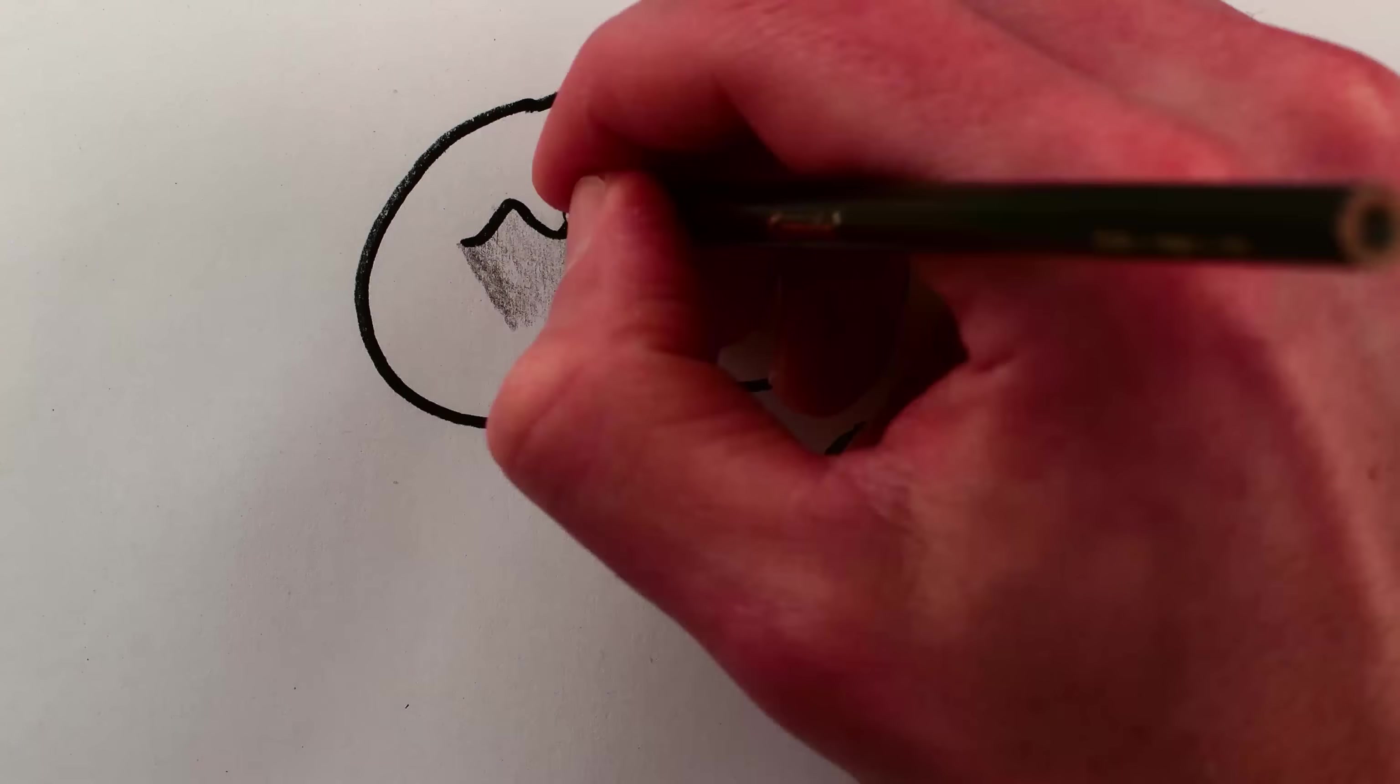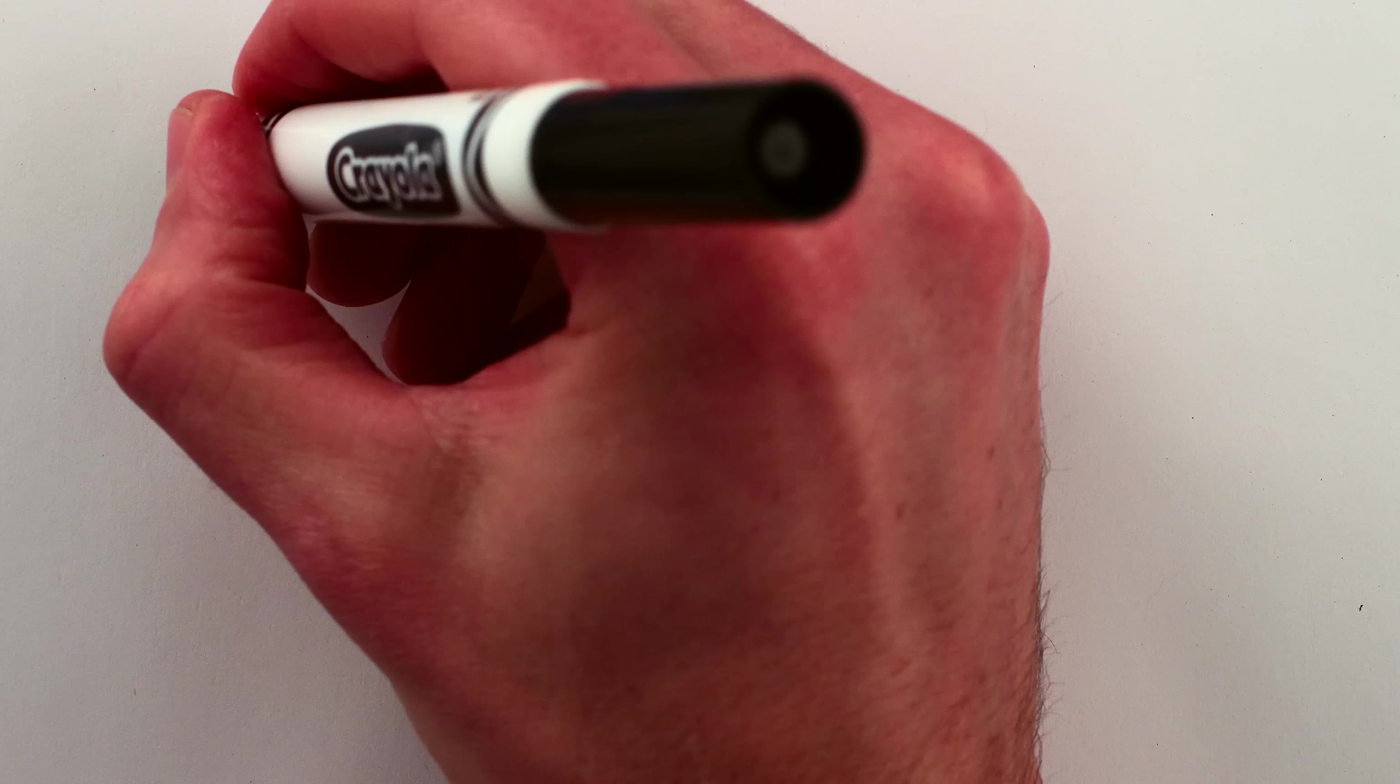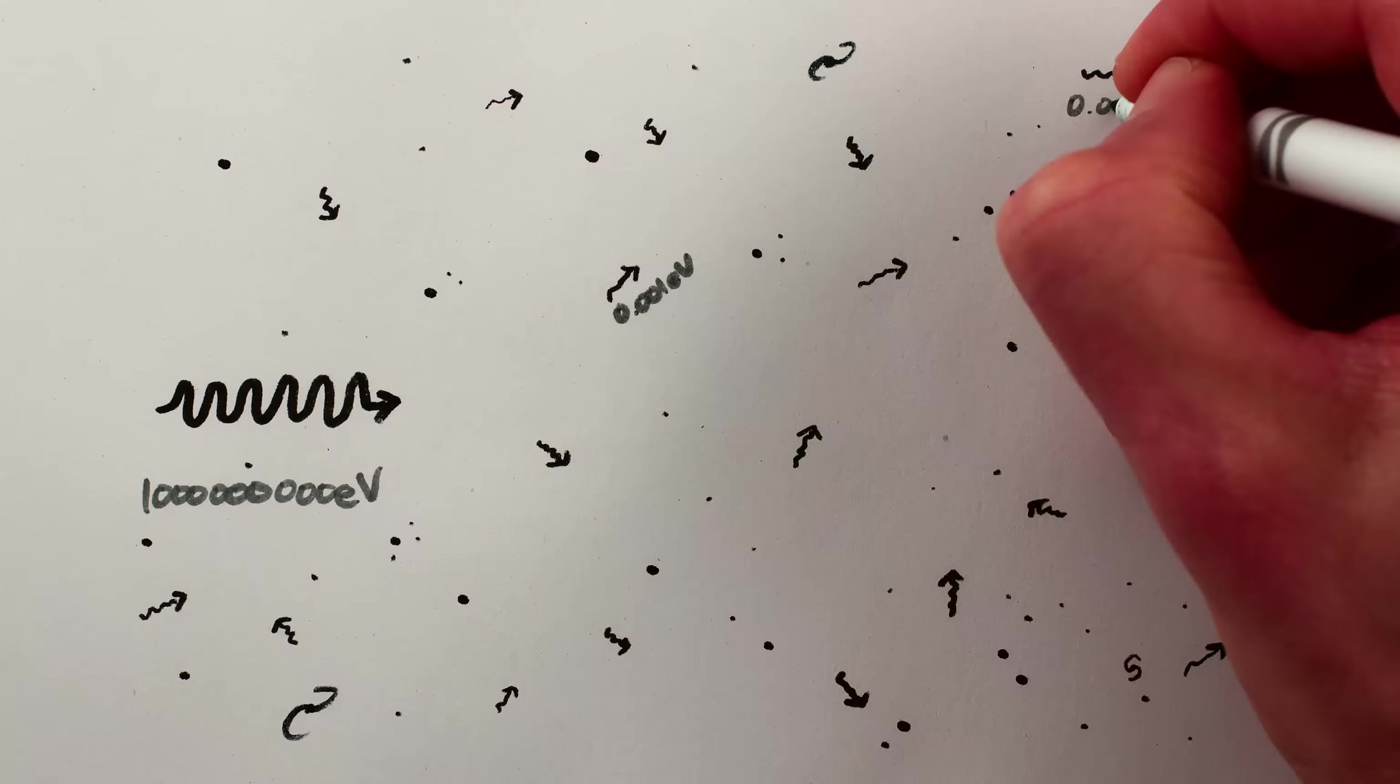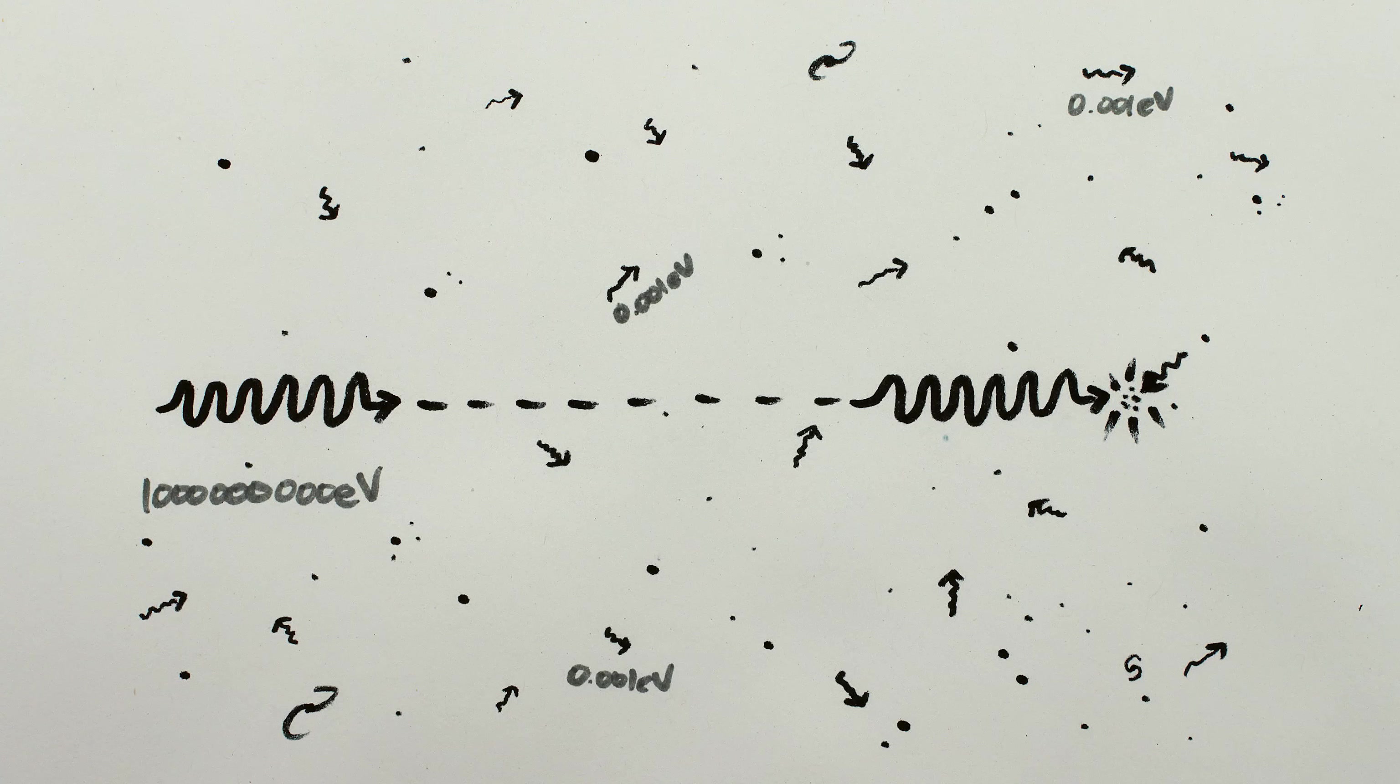But there is one very real way that photons cast shadows. Because space is so huge, super high energy photons traveling through it do eventually crash into one of the many low energy photons of the cosmic microwave background radiation that are present pretty much everywhere in the universe.